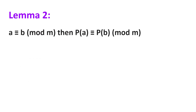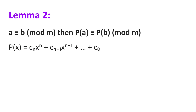Now, we will show that if a is congruent to b modulo m, then p(a) is congruent to p(b) modulo m. Again, we're working in the integers. Let p be such that p(x) = c_n·x^n + c_(n-1)·x^(n-1) + ... + c_0, where c_0, c_1, c_2, ..., c_n are all integers.